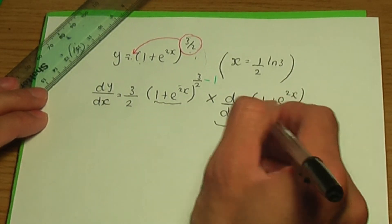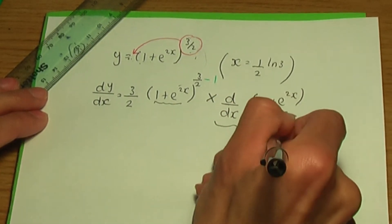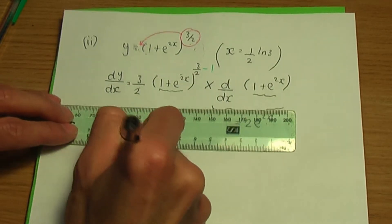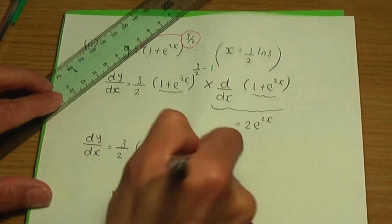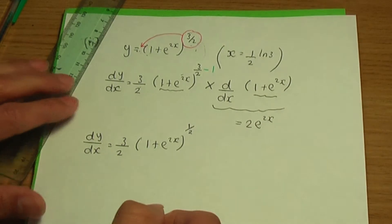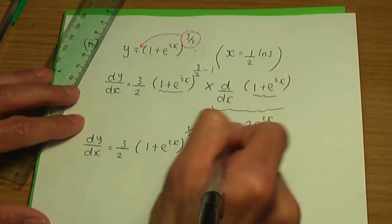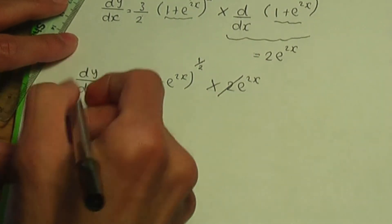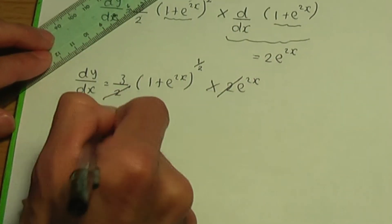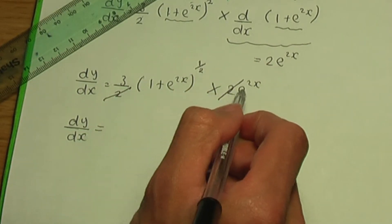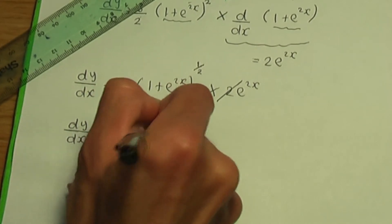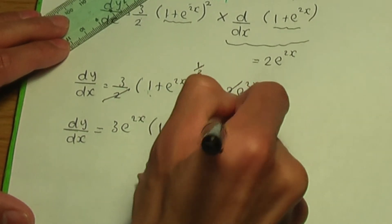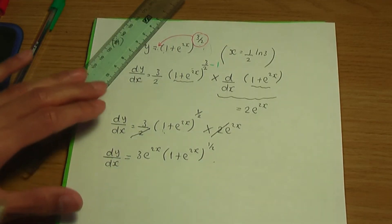When I differentiate 1 plus e to the 2x, we get 2e to the 2x. So simplifying dy over dx: we have 3 over 2 times (1 plus e to the 2x) to the power of 1 half, multiplied by 2e to the 2x. The 2 in 3 over 2 and the 2 from differentiating cancel, giving dy over dx equals 3e to the 2x multiplied by (1 plus e to the 2x) to the power of one half.